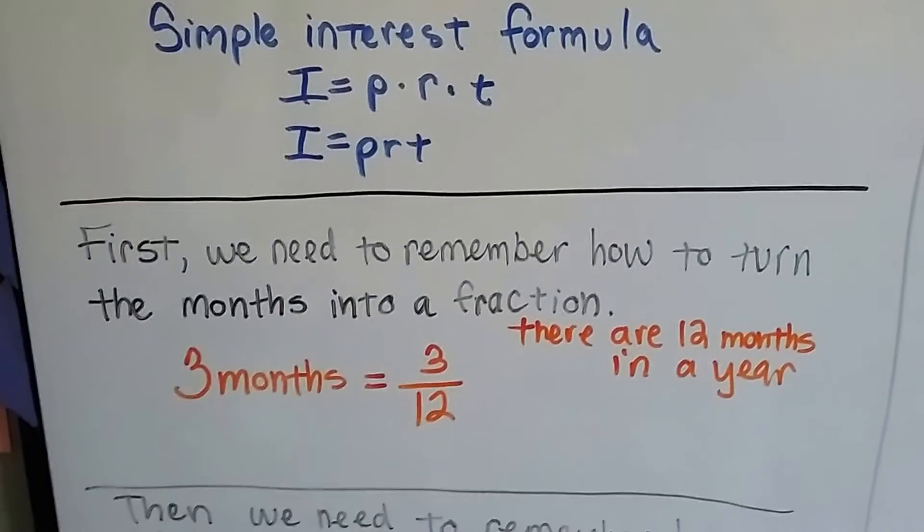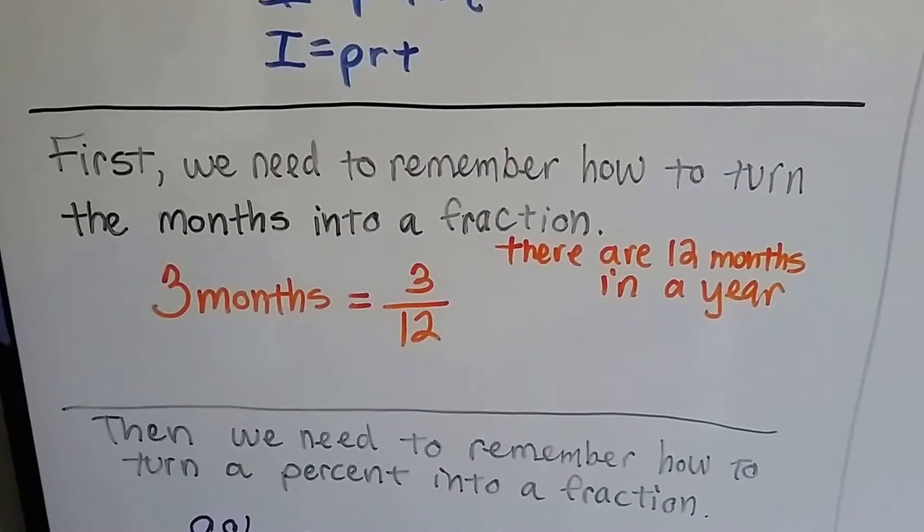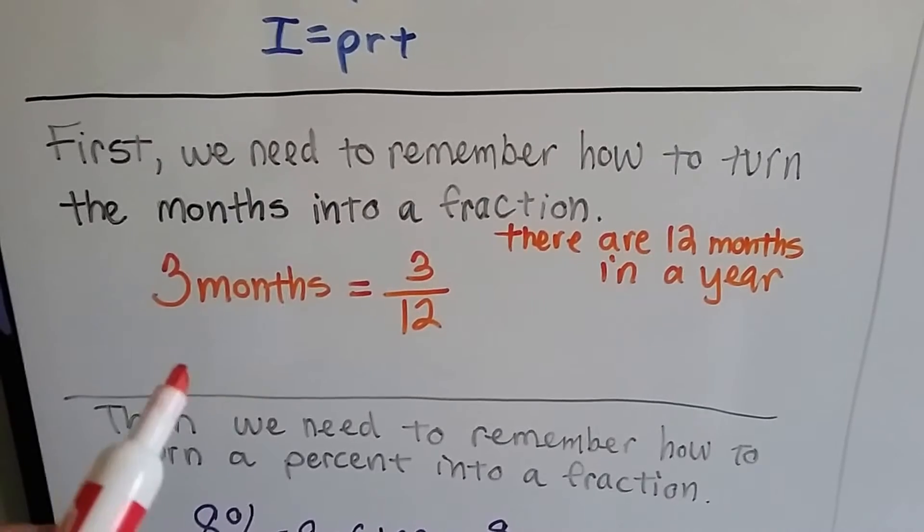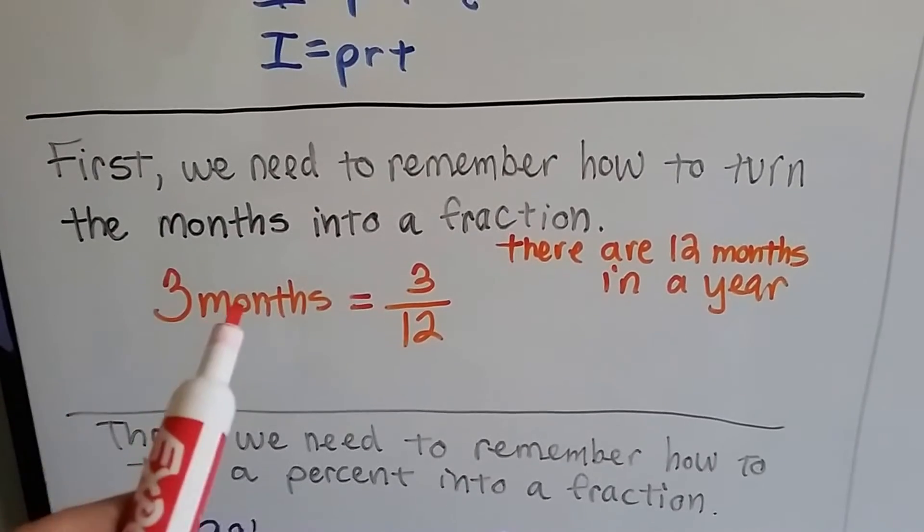First we need to remember how to turn the months into a fraction. There's 12 months in a year, so three months would be three twelfths. That wasn't a big deal, was it?